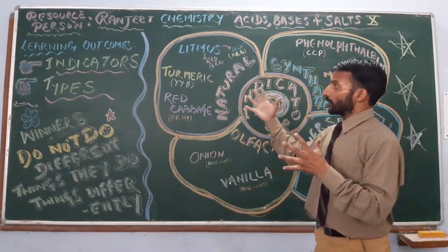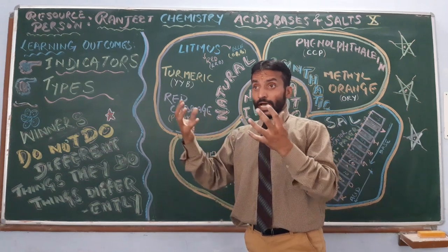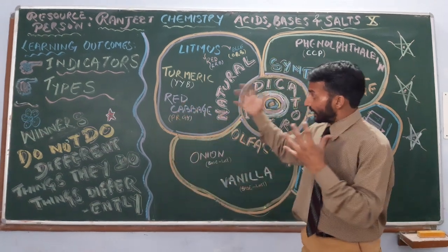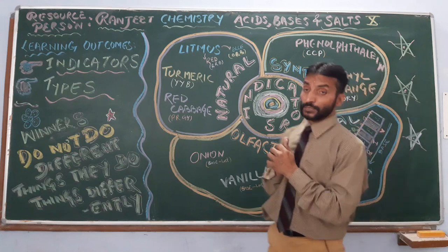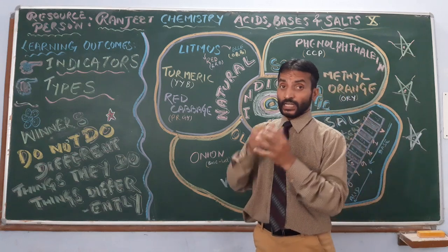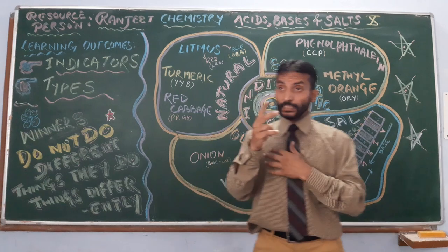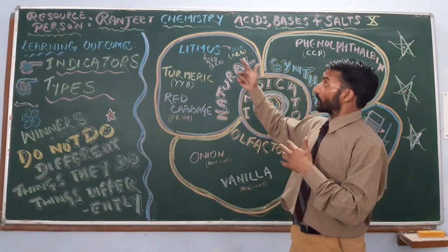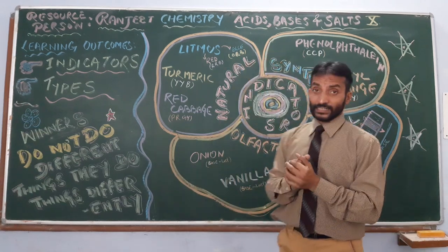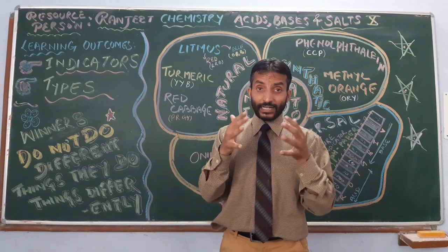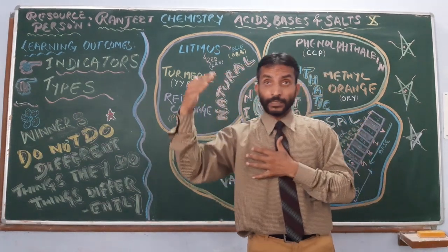Natural indicators are those which are present in nature — we extract these from nature. First is litmus. Litmus is extracted from lichen. It is of two types: blue litmus and red litmus.